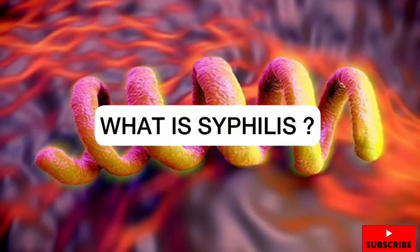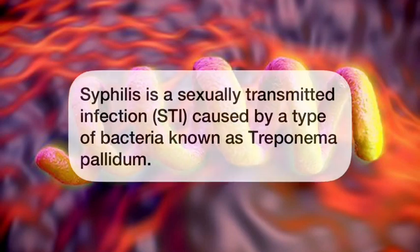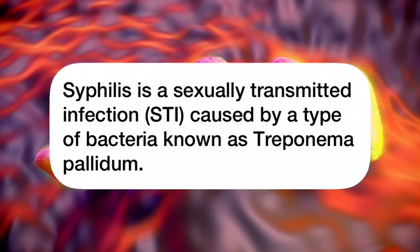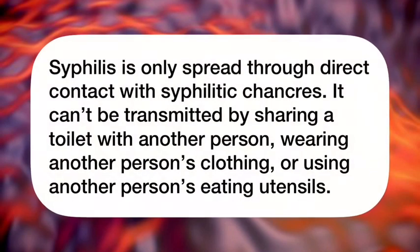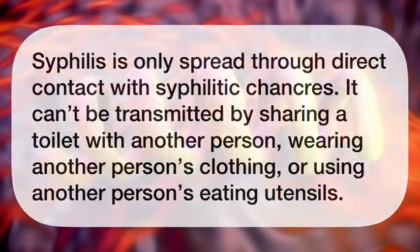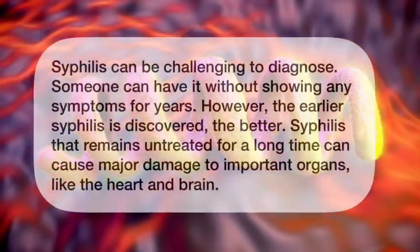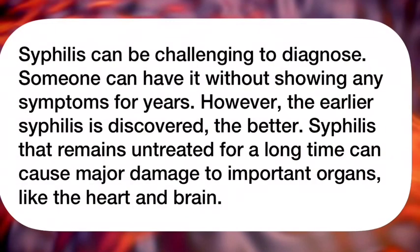So what is syphilis? Syphilis is a sexually transmitted infection caused by a type of bacteria known as Treponema pallidum. Syphilis is only spread through direct contact with a syphilitic chancre. It can't be transmitted by sharing a toilet with another person, wearing another person's clothing, or using another person's eating utensils.